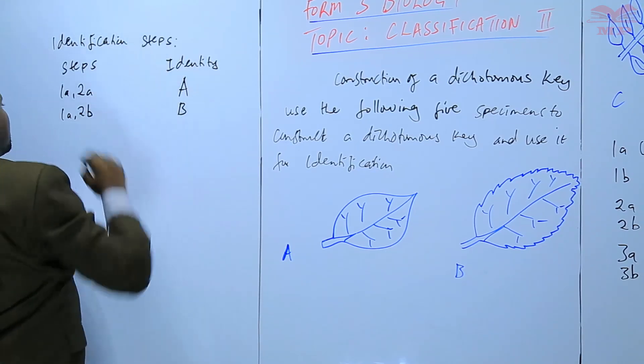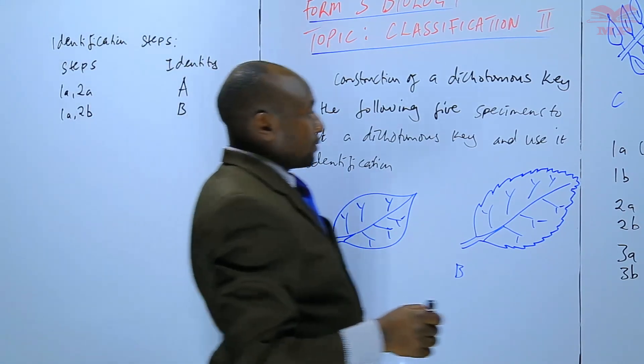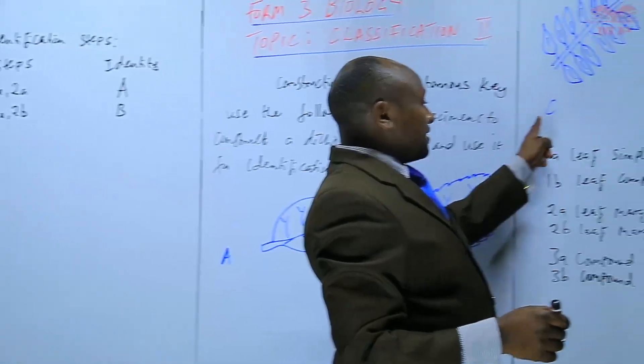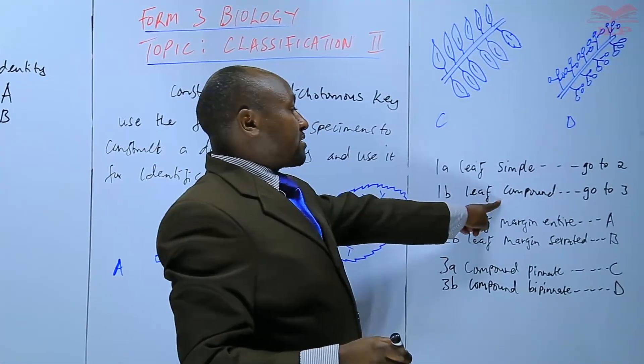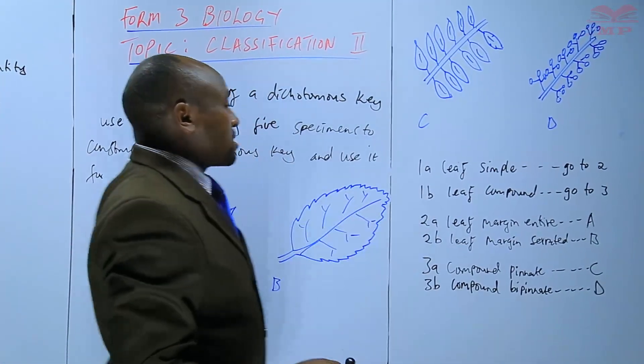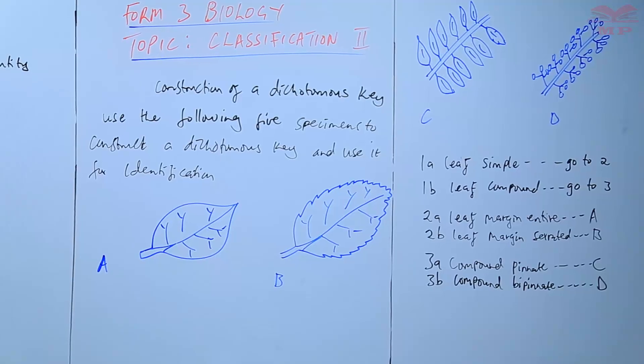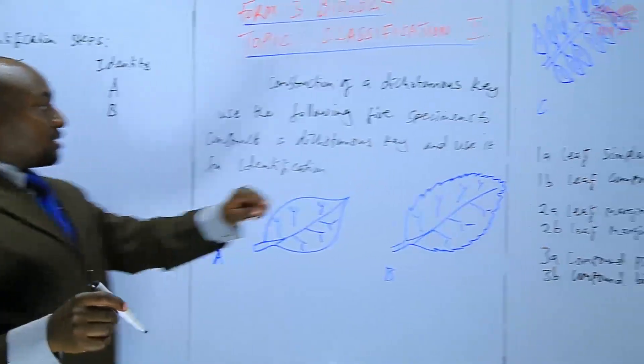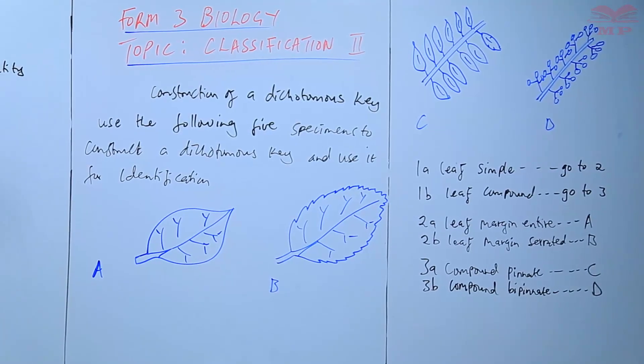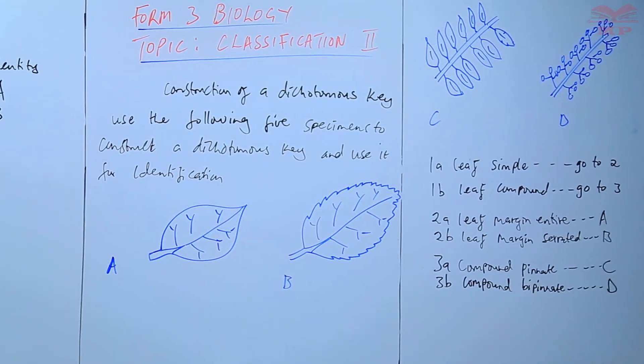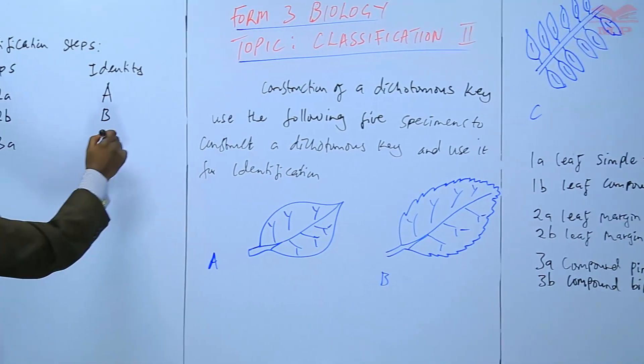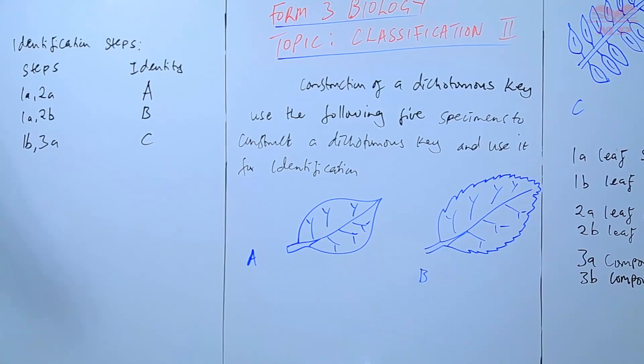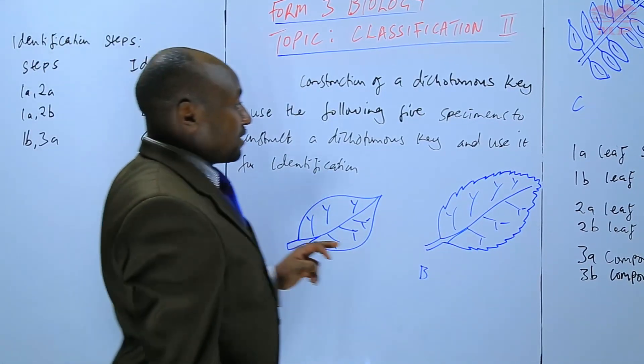We go to C, this is a leaf compound, not leaf simple. We start with step 1B. Step 1B tells us that go to 3. Go to 3, when you go to 3, C is a compound pinnate. 3A, and that is the identity.